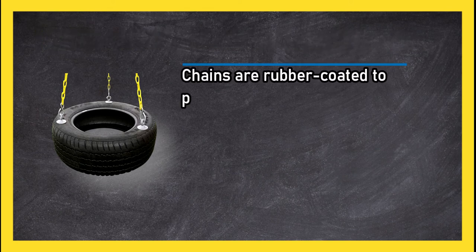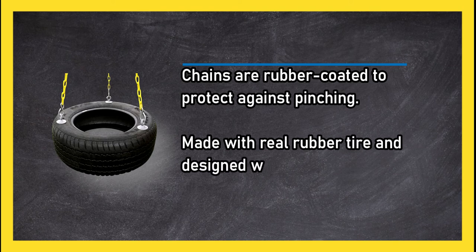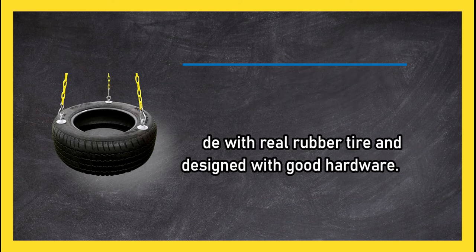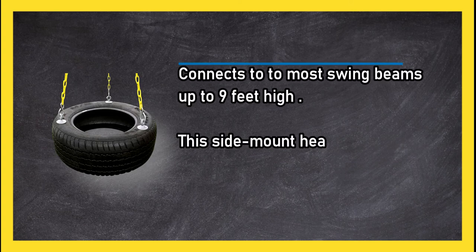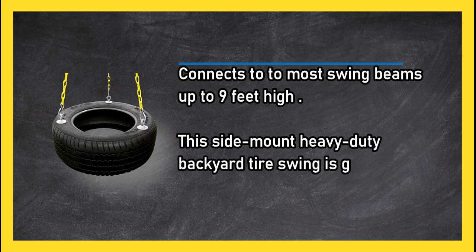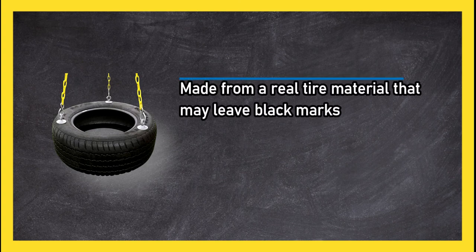Chains are rubber coated to protect against pinching, made with real rubber tire and designed with good hardware. Connects to most swing beams up to nine feet high. This side mount heavy-duty backyard tire swing is given a practical design made from real tire material that may leave black marks on hands and clothing.